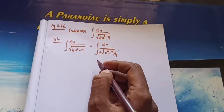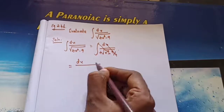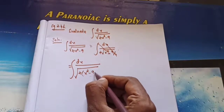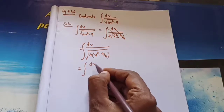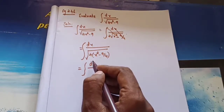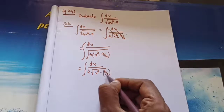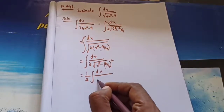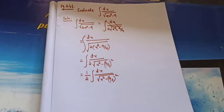Writing 9/4 as (3/2)²: we have (1/2) times integral of dx divided by √[x² minus (3/2)²]. Now we can use the formula. The formula for dx/√(x² minus a²) is: log|x plus √(x² minus a²)| plus C. We directly apply this formula.